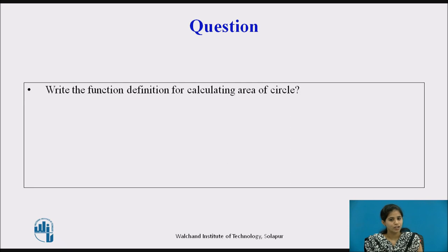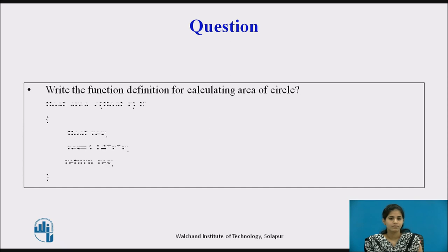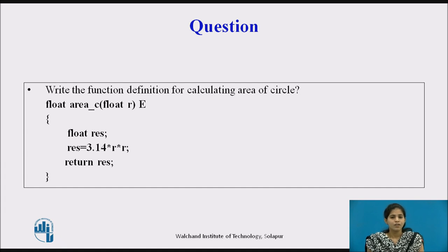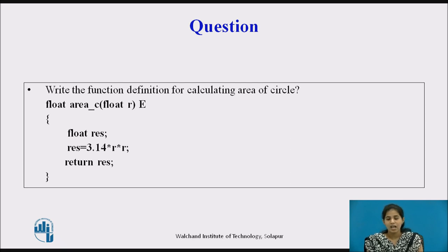Can you write the function definition for calculating the area of a circle? First we declare the function header: return type is float, name of the function is area_c, and it takes one parameter of type float. Then we open the curly braces, define one local variable res to store the result, calculate the area of circle, store the result in res, use a return statement to return the value to the calling function, and then close the function.